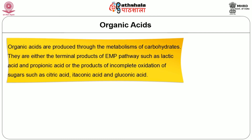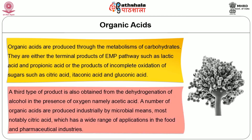Next are organic acids. Organic acids are produced through the metabolism of carbohydrates. They are either the terminal products of the EMP pathway such as lactic acid and propionic acid, or the products of incomplete oxidation of sugars such as citric acid, itaconic acid and gluconic acid. A third type of product is also obtained from the dehydrogenation of alcohol in the presence of oxygen, namely acetic acid. A number of organic acids are produced industrially by microbial means, most notably citric acid, which has a wide range of applications in the food and pharmaceutical industries. This is mostly produced as a secondary metabolite by the large-scale culture of the mold Aspergillus niger.